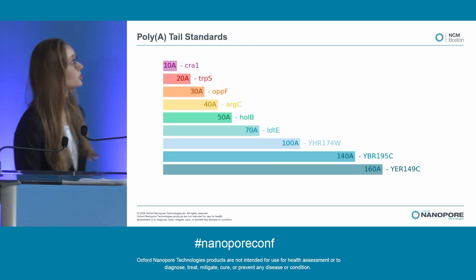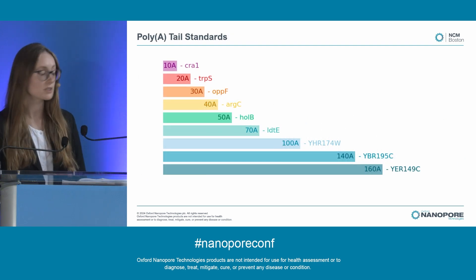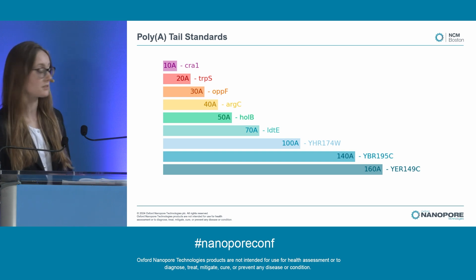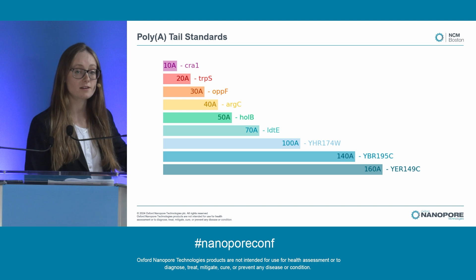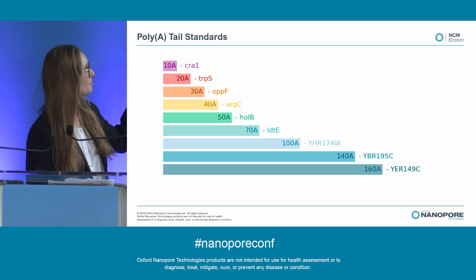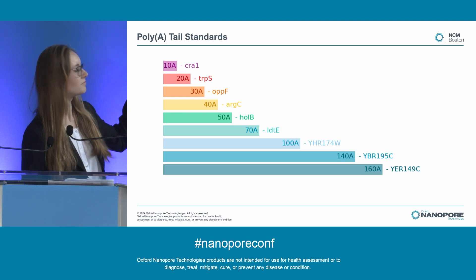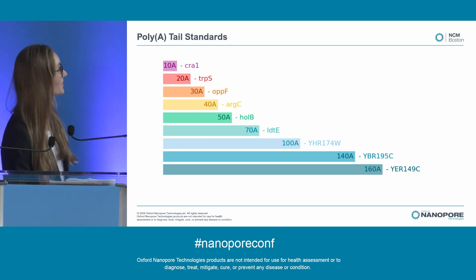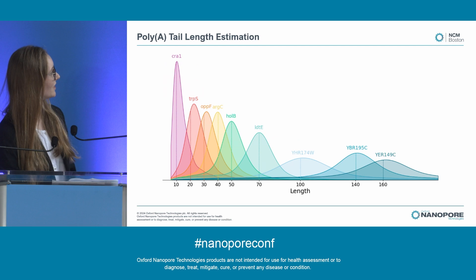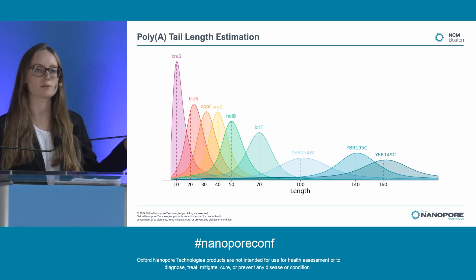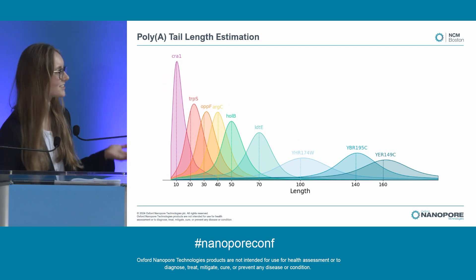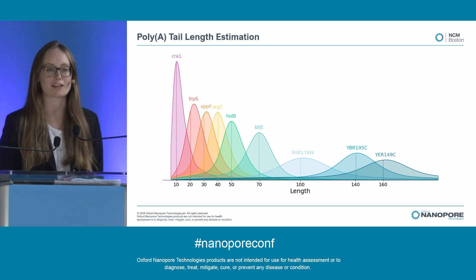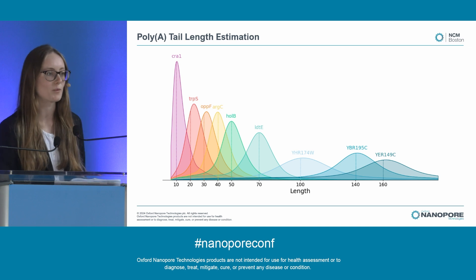To validate this approach, we have created a set of poly-A tail standards made from transcripts with known poly-A tail lengths from E. coli and yeast. These range from a 10-base poly-A tail all the way through to a 160-base poly-A tail. And when we base call these, the same numbers across the bottom are our expected poly-A tail lengths, and the distributions show the predicted poly-A tail lengths — all of these tend to be centered around the poly-A tail length that we are expecting.